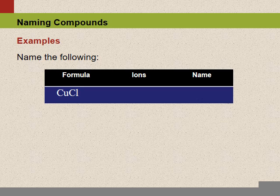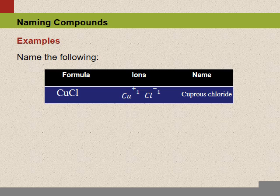Let's name the formula CuCl. The first step is to uncross the charges — copper has a charge of plus one and chlorine has a charge of minus one. Since we're talking about the copper plus one version, we're talking about the 'ous' version. So we name this cuprous chloride. You could also use a Roman numeral: copper(I) chloride would also be acceptable.